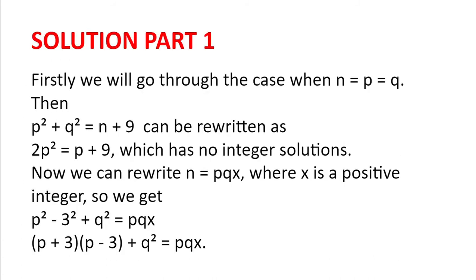Solution. Firstly, we will go through the case when n equals p equals q. Then we can rewrite p squared plus q squared equals n plus 9 as 2p squared equals p plus 9. But using the quadratic formula, we find that this has no integer solutions.